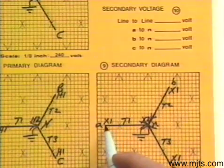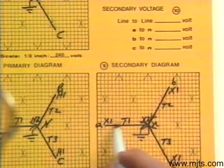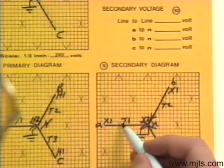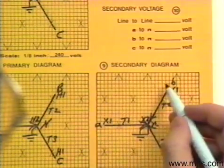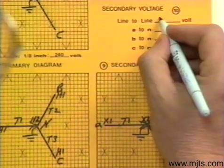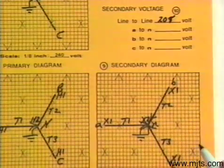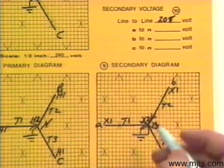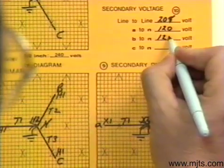Using our 3-phase constant: we have 120 volts to ground, so multiplying by 1.73 gives us the phase-to-phase value of 208 volts. From line to line we'll have 208 volts, and phase-to-neutral on all three phases we'll have 120 volts.